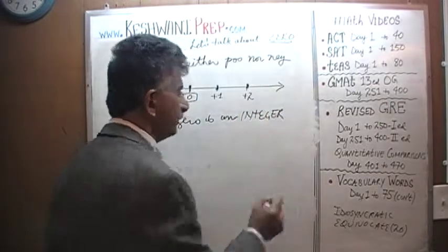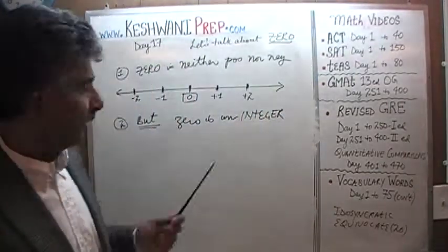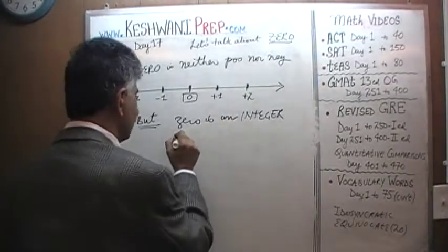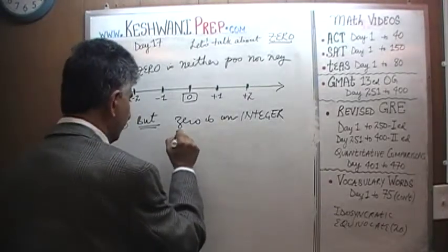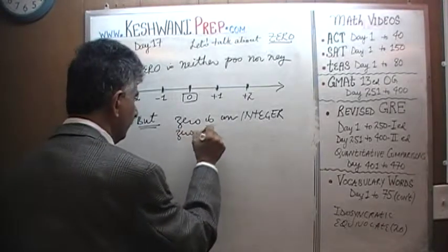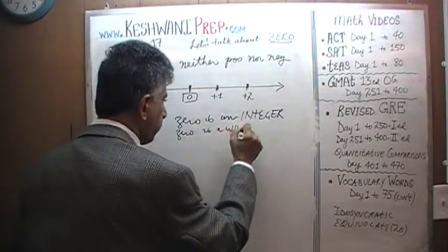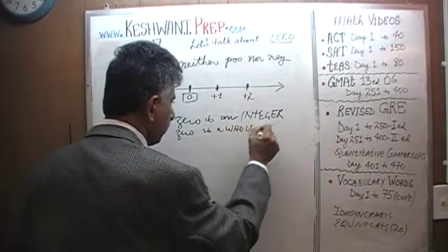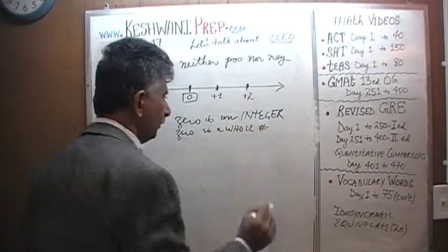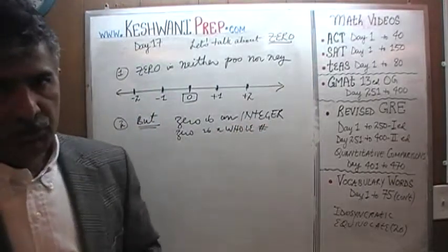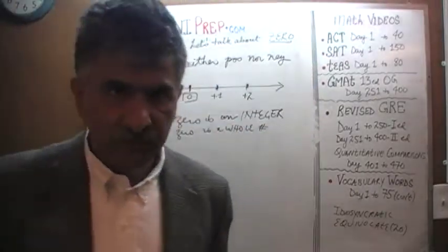Zero is considered a whole number. Zero is a whole number, which is what an integer is. 'Integer' is just a fancy way of saying a whole number.